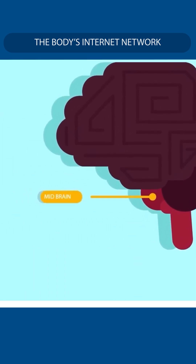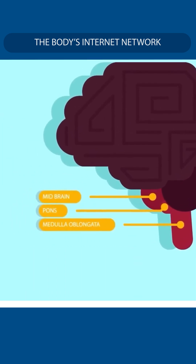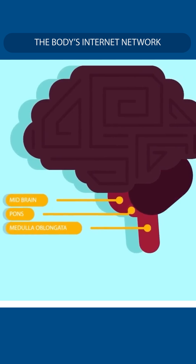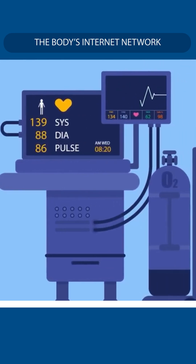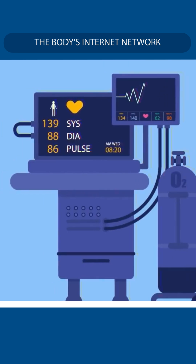The brainstem includes the midbrain, pons, and medulla oblongata. It controls your body's involuntary actions like breathing, heart rate, and blood pressure.